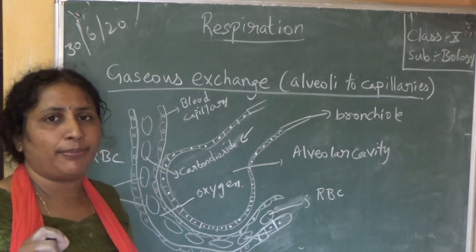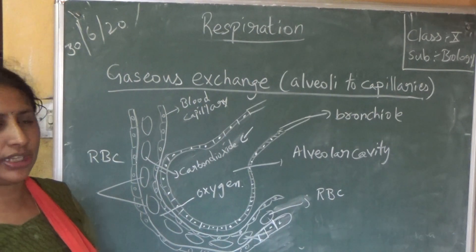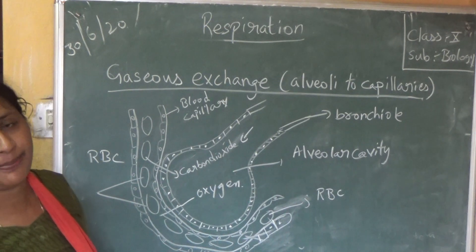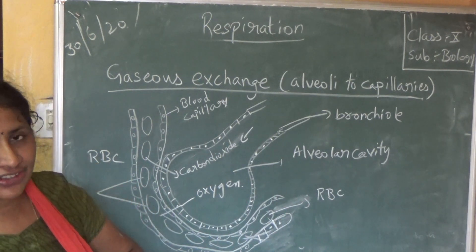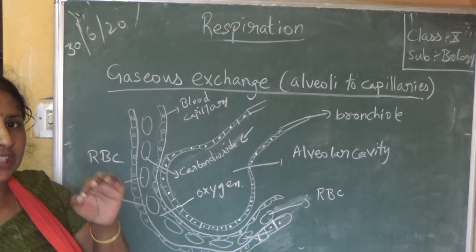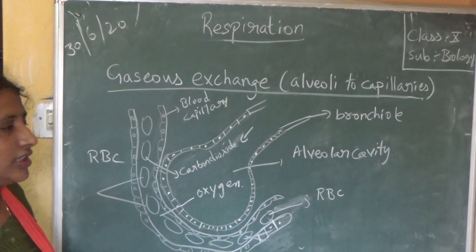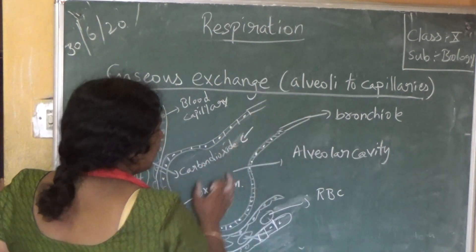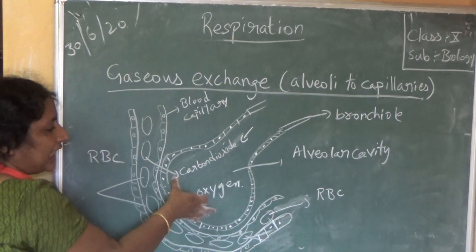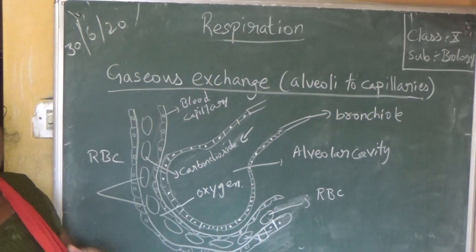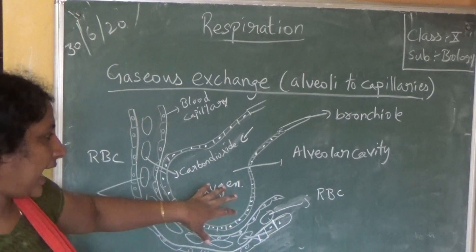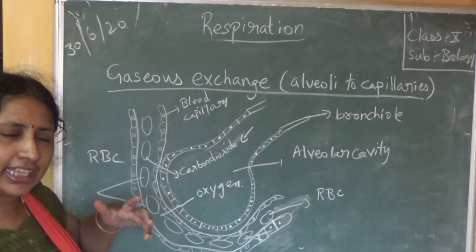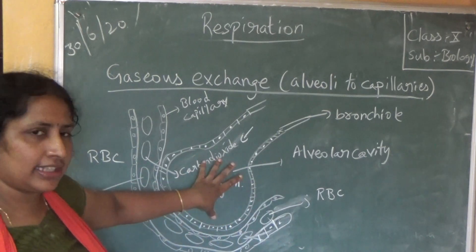The cell membrane is very thin and made up of a single layer of cells. Now the air is filled in the alveoli. This air has oxygen, carbon dioxide, nitrogen — everything is present in this mixture.